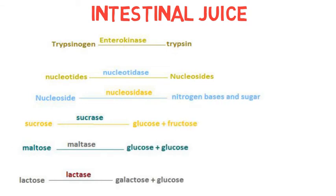Nucleosides are converted into nitrogen bases and sugars with the help of nucleosidase. Sucrose is broken down into glucose and fructose by the action of sucrase. Maltose is converted into glucose and glucose in the presence of maltase. Whereas lactose, which is milk sugar, is converted into galactose and glucose by the action of lactase.